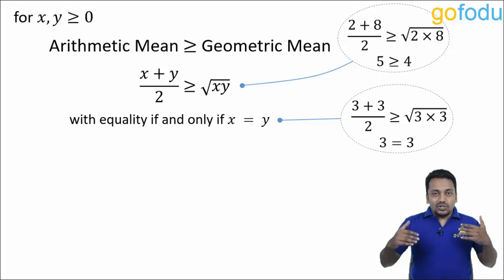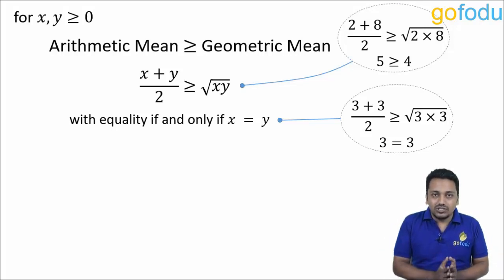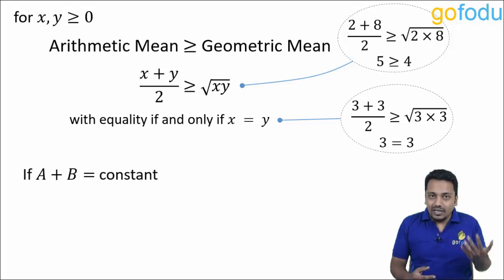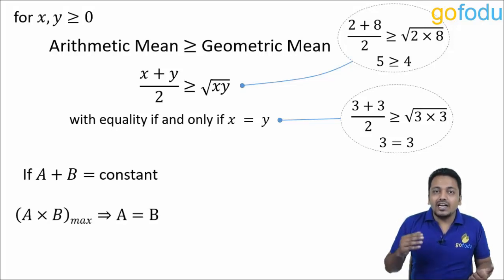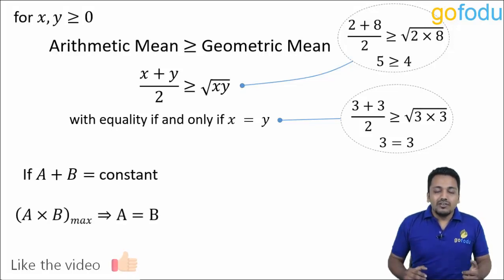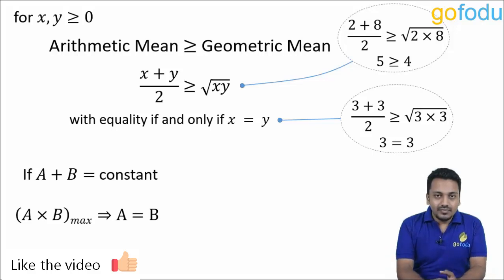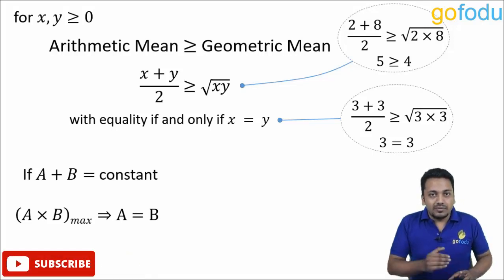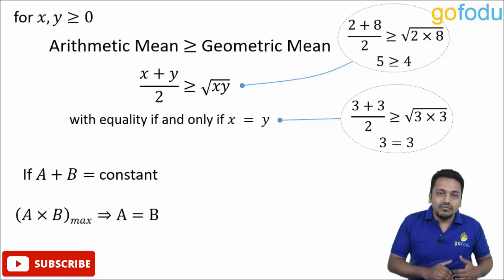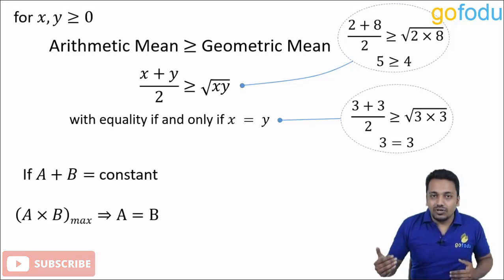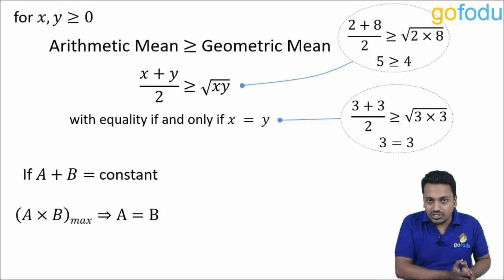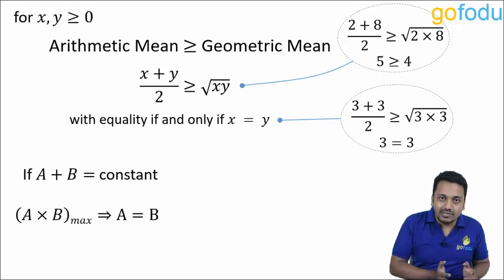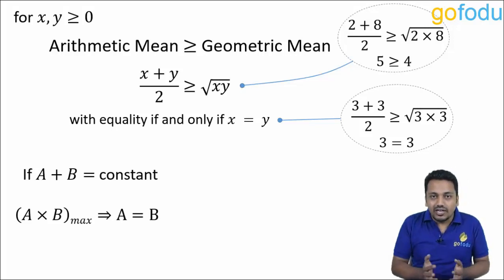So now there are two deductions from AM greater than or equal to GM. First is if A plus B is constant, then product of A and B would be maximum when A is equal to B. Now you can extend this logic for more numbers as well. If A plus B plus C is constant, if sum of three numbers is constant, then product A, B, C will be maximum when A is equal to B is equal to C. If sum of three variables is constant, then product of those variables will be maximum when all three variables are equal.